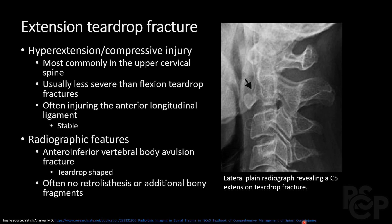The extension teardrop fracture more commonly happens in the upper cervical spine, as compared to flexion teardrop fractures which occur in the lower cervical spine. This type of fracture is more likely to be benign, and while there is risk for anterior longitudinal ligament injury, it may still remain a stable fracture. It appears radiographically similar to a flexion teardrop fracture, as it favors the anteroinferior portion of the vertebral body; however, it typically does not involve traumatic retrolisthesis or bony fragments.